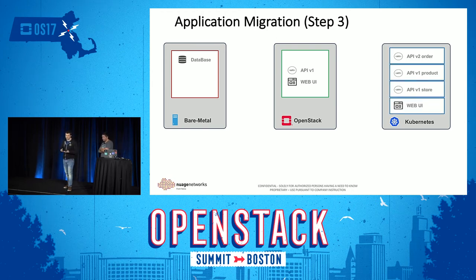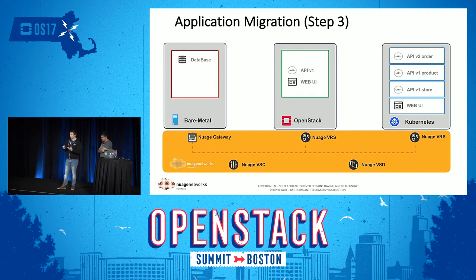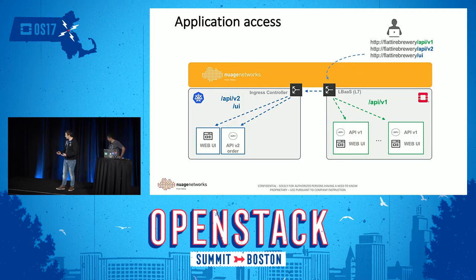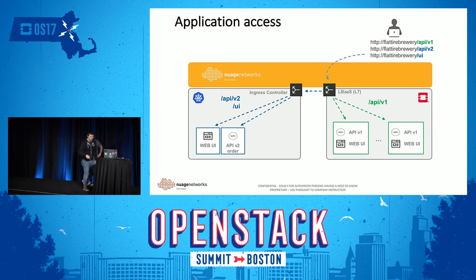As Alex said, there is a network challenge: how do you connect everything together? Nuage Networks provides the solution — we can connect any kind of workload: bare metal to containers, containers to virtual machines, and everything works together as if it were on the same network. In this demo, we'll use two different types of load balancer: the OpenStack load balancer service — specifically the Radware Alteon load balancer — and for Kubernetes, we'll use an Ingress controller based on Traefik.